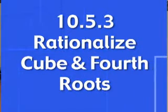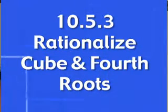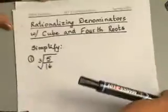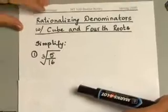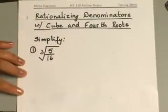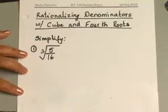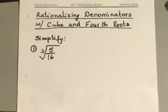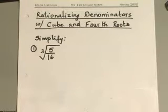Let's talk about examples where you are dealing with higher roots, maybe something like cube roots or even fourth roots. How would you rationalize those denominators? Let's take a look at this example: you have cube root of 5 over 16.